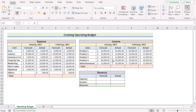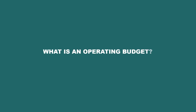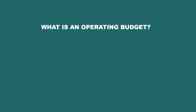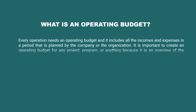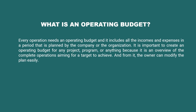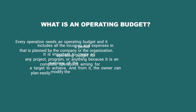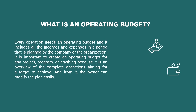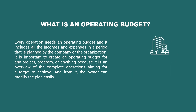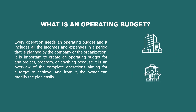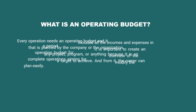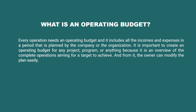Let's talk about what is an operating budget. Every operation needs an operating budget and it includes all the incomes, expenses, and revenue in a period that is planned by the company or the organization. By using it, the owner can easily modify the plan for the benefit of the company.